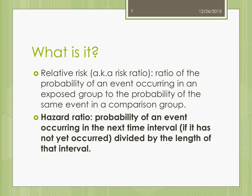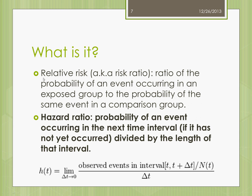What is hazard ratio? Let's first look at relative risk, also called risk ratio. Relative risk is the ratio of the probability of an event occurring in an exposed group to the probability of the same event in the comparison or placebo group. Hazard ratio, on the other side, is the probability of an event occurring in the next time interval — if it has not yet occurred — divided by the length of that interval. This is what the equation represents: observed events in a time interval divided by the number at risk divided by the time interval, as that time interval approaches zero.